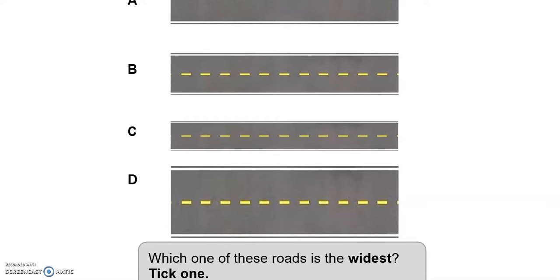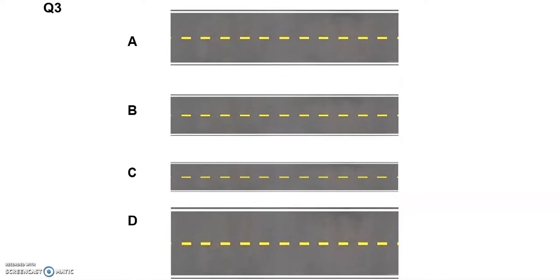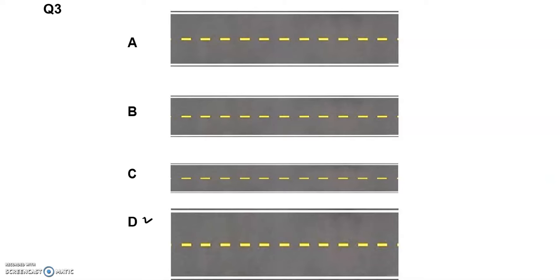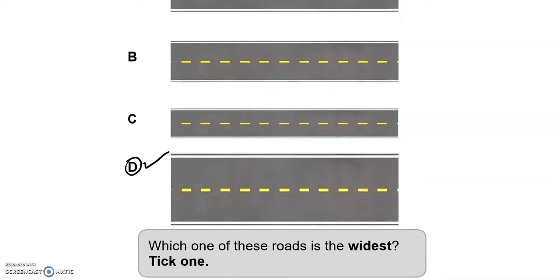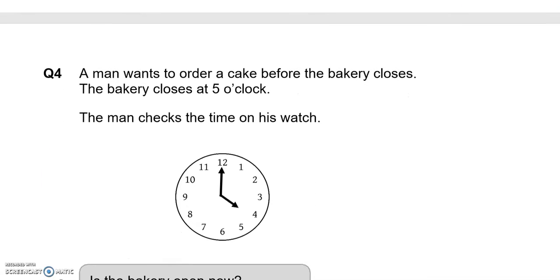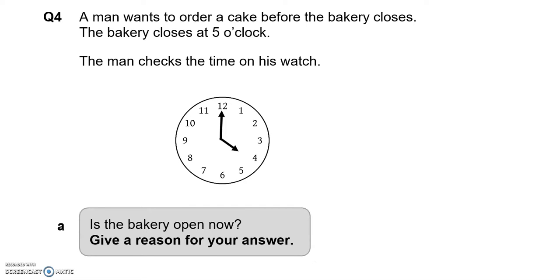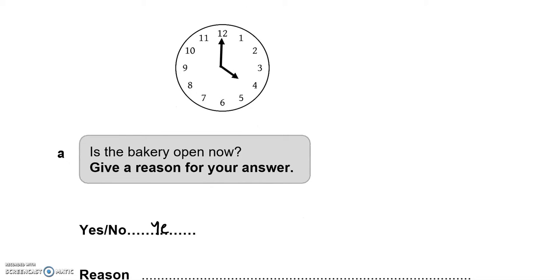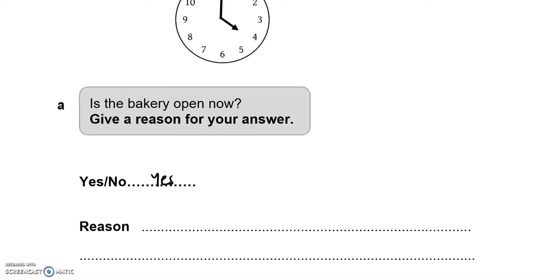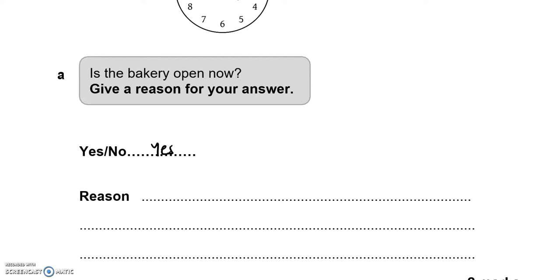Which one of these rows is the widest? Tick one. The widest of them all is D. A man wants to order a cake before the bakery closes. The bakery closes at 5 o'clock. The man checks the time on his watch. Is the bakery open now? Yes. Reason: It will close in one hour's time, it's only 4 o'clock.